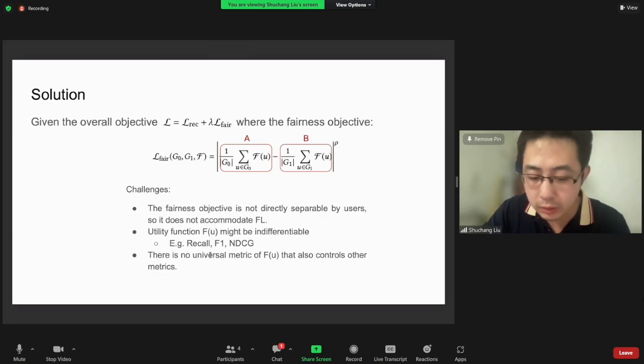Our goal is to learn a recommendation model that has the controllability of the unfairness or the fairness that's evaluated as the difference between user group performances.